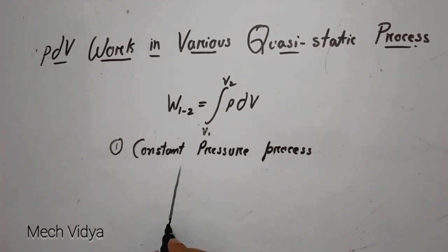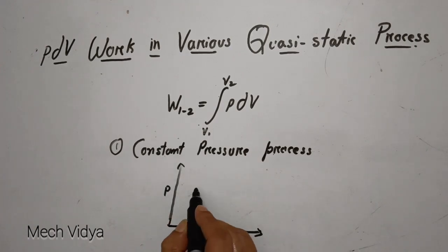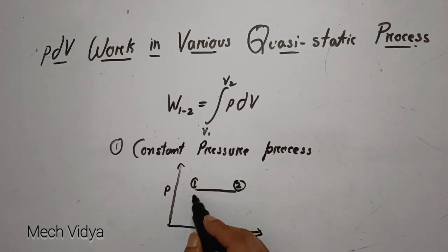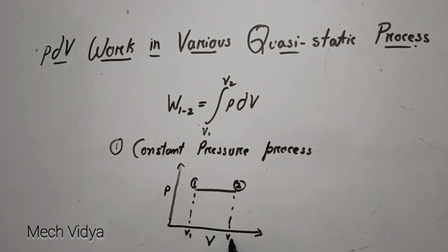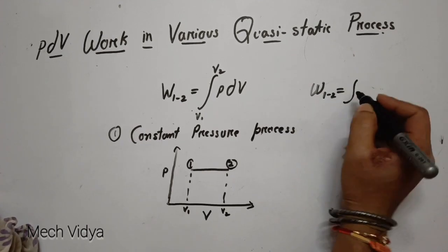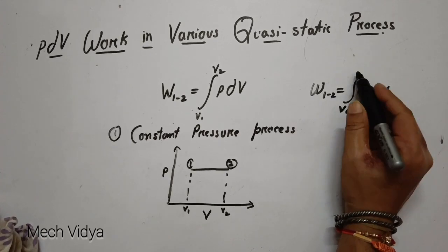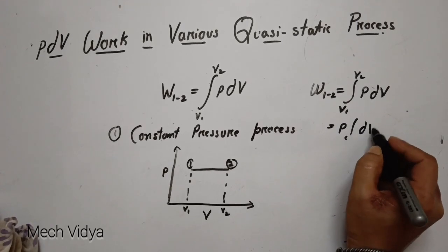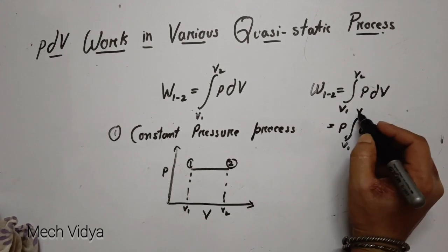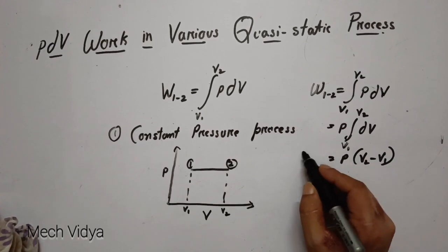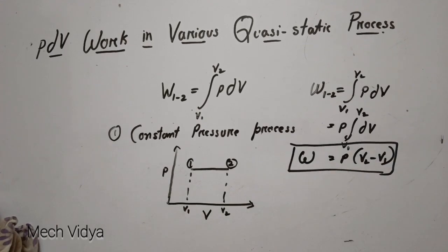Starting with the constant pressure process: if we draw this process in a PV diagram, it appears as a straight horizontal line, because pressure is constant as the system changes from state 1 to 2 — there is no change in pressure, but volume changes. Using this in the main equation, pressure can be taken out of the integration since it is constant. We are left with the integration of dV from V1 to V2, giving the formula: W = P(V2 − V1).